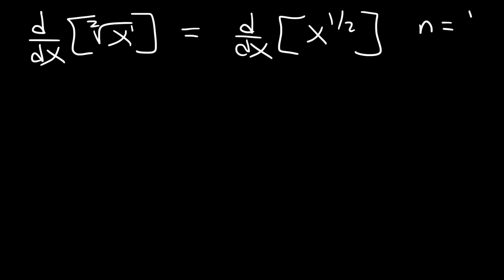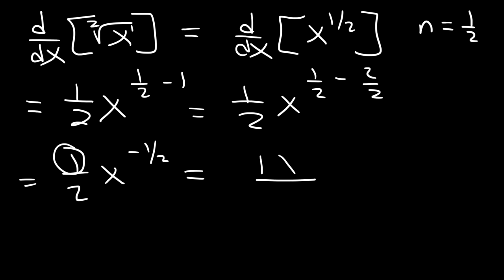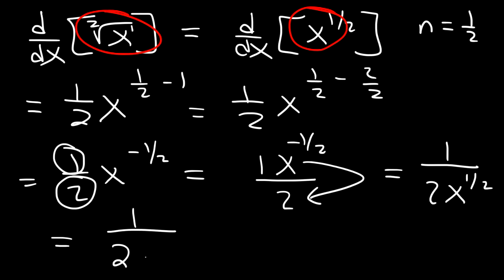In this example n is one-half, so the derivative is one-half times x to the one-half minus 1. To compute the exponent we need common denominators: 1 is the same as two-halves, and one-half minus two-halves is negative one-half. So we have one-half times x to the negative one-half. Moving x to the bottom gives 1 over 2x to the one-half, and since x to the one-half is the square root of x, the final answer is 1 over 2 times the square root of x.